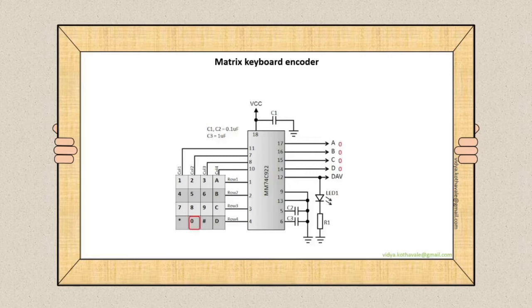If the key 0 is pressed on the input keyboard, then the BCD output obtained is 0000. Similarly, for example, if key 7 is pressed, the BCD output obtained is 0111.